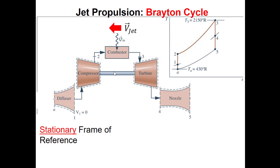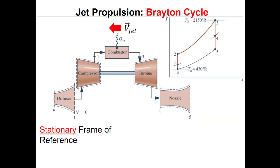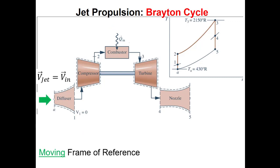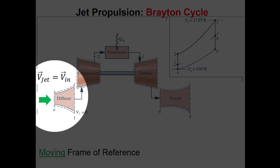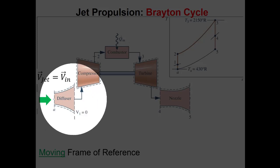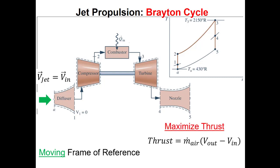If we have a turbojet moving through still air, we think about this problem as if we're standing on the wing of the plane, moving from a stationary frame of reference to a moving frame of reference. In the stationary frame the jet is moving, but standing on the wing above the engine, the air - though still in the stationary frame - is coming right at us. That's exactly why we have a diffuser: to take that kinetic energy and turn it into enthalpy, charging up the enthalpy of the working fluid. Ultimately, with turbojet engines we're trying to maximize the thrust produced.